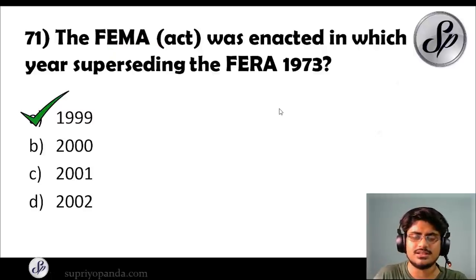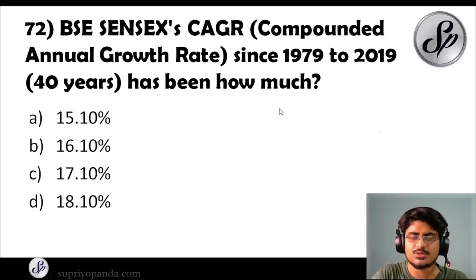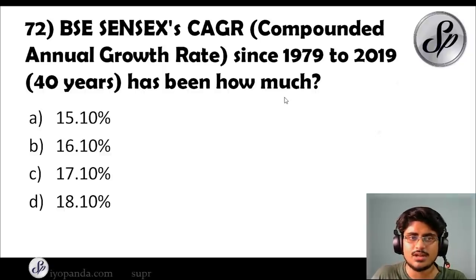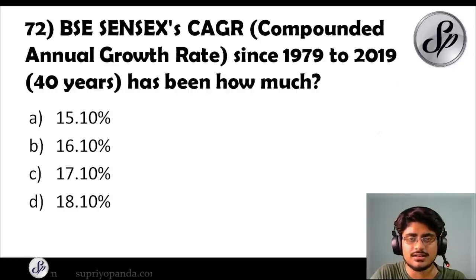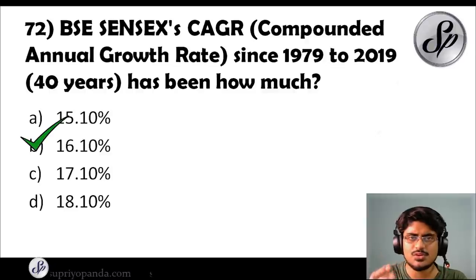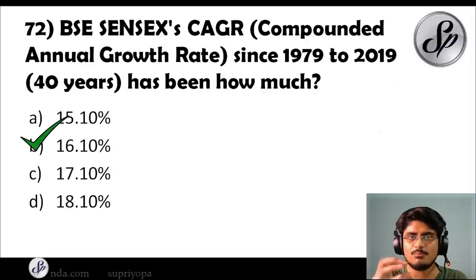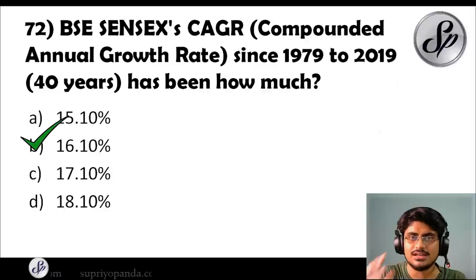Question seventy-two: BSE Sensex's CAGR — compounded annual growth rate — from 1979 to 2019, over 40 years, has been how much? The answer is 16.1% (or more precisely, 16.09%). That is the compounded annual growth rate of the Sensex over the last 40 years — a very important figure to remember.